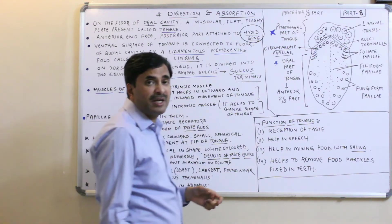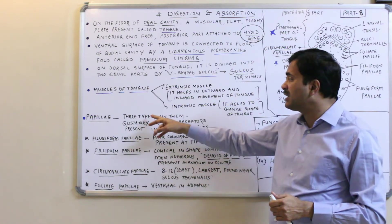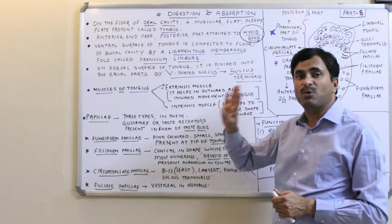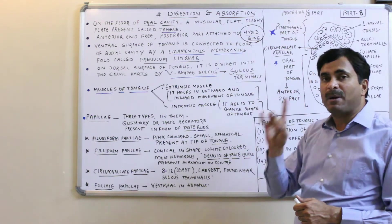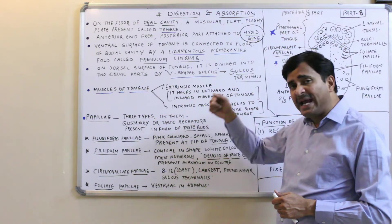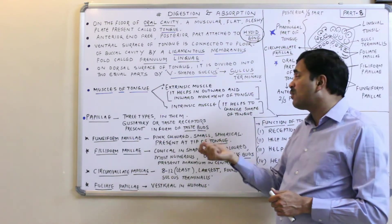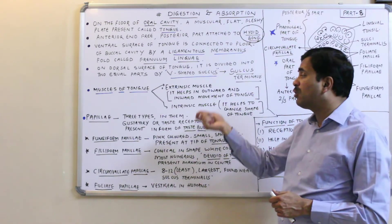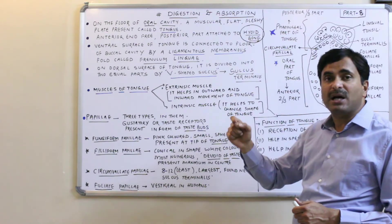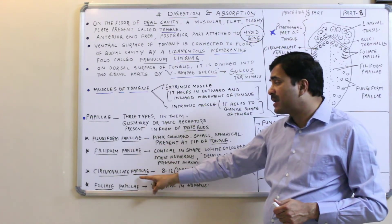An important structure found on the tongue is the papilla. In human beings, three types of papillas are found, though four types are discussed here — one type is not found in human beings at all. In these papillas, gustatory receptors, meaning taste receptors, are present in the form of taste buds. The three types are the fungiform papilla, the filiform papilla, and the circumvallate papilla.